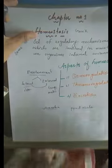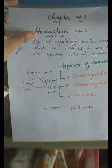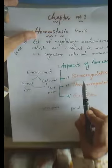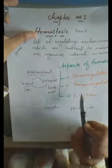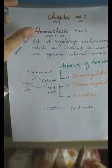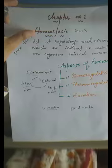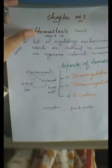There are three aspects of homeostasis. Number one is osmoregulation, number two is thermoregulation, and number three is excretion.